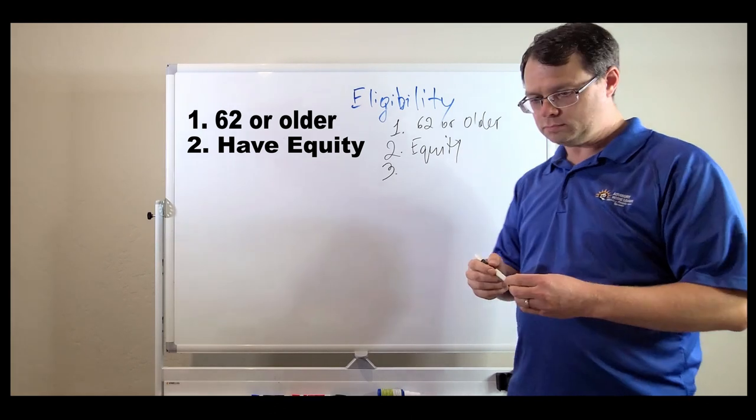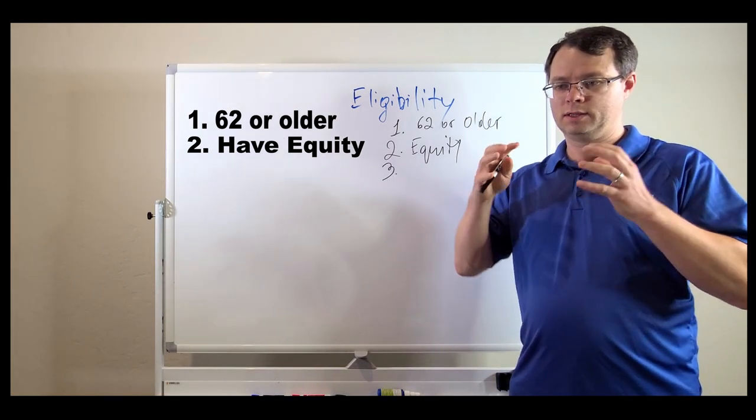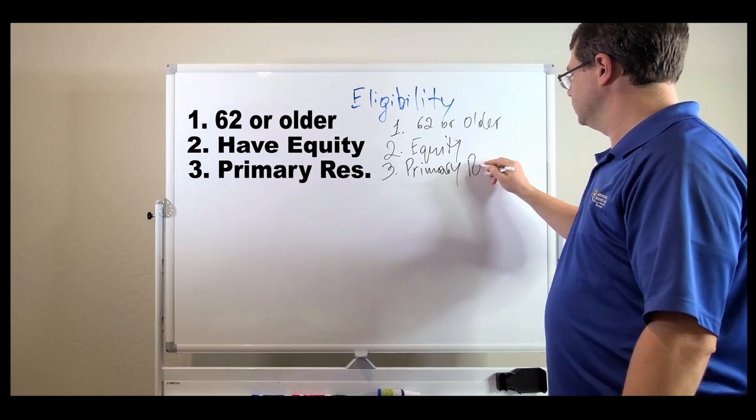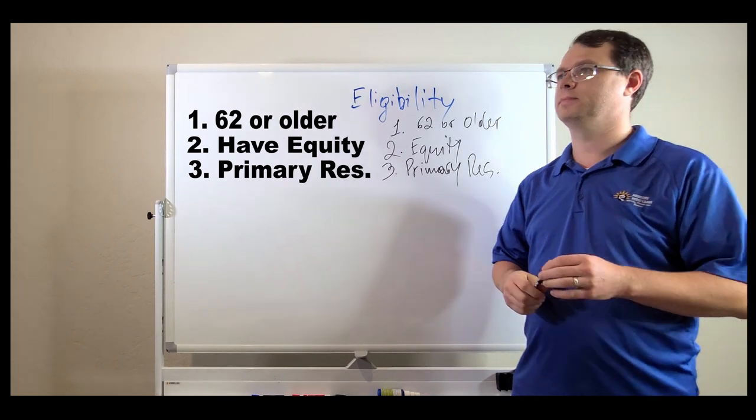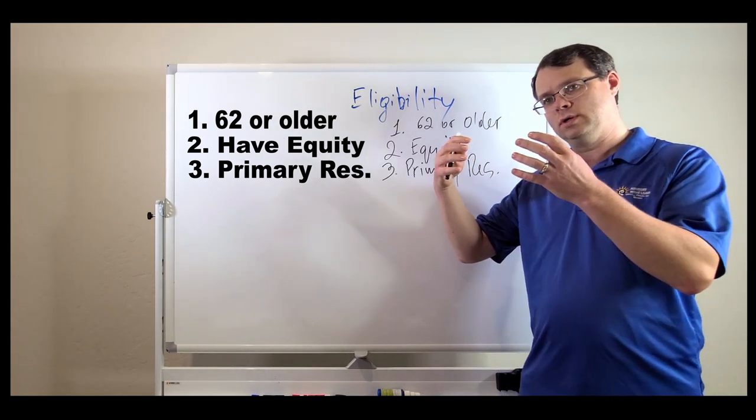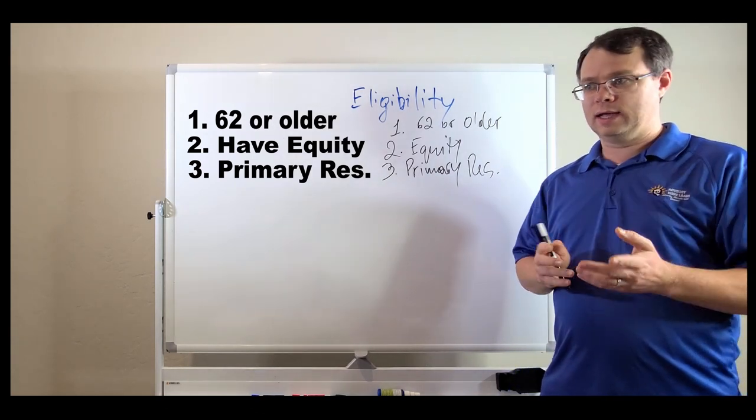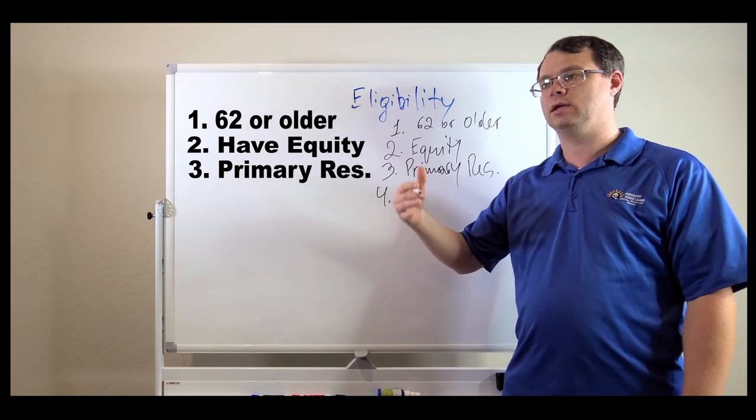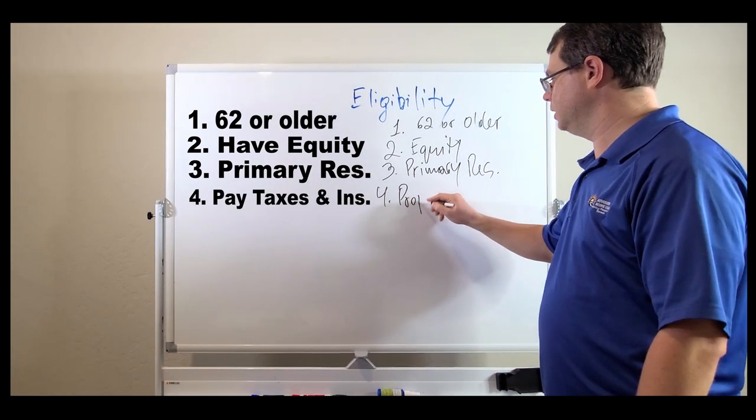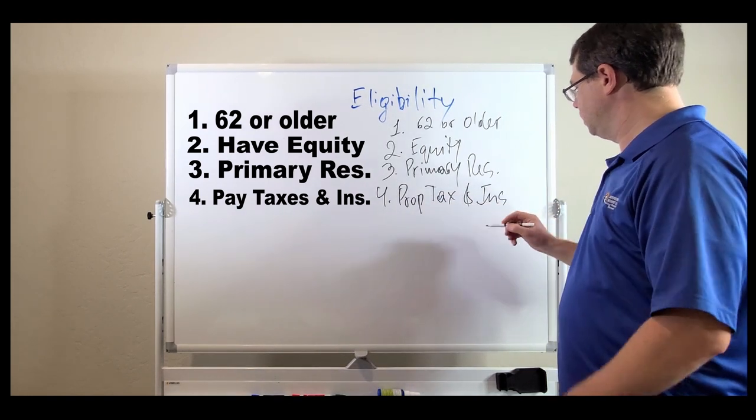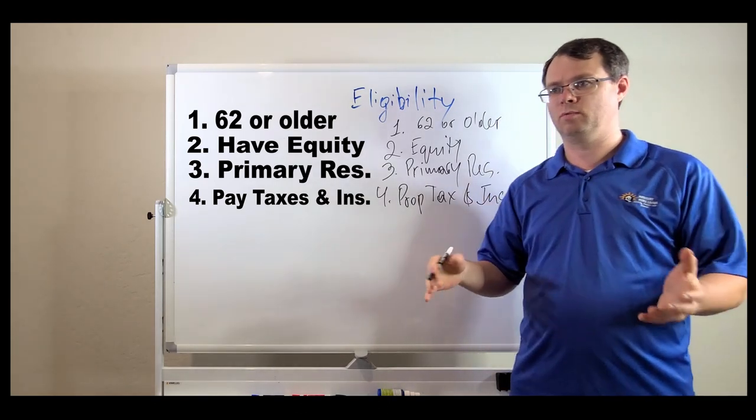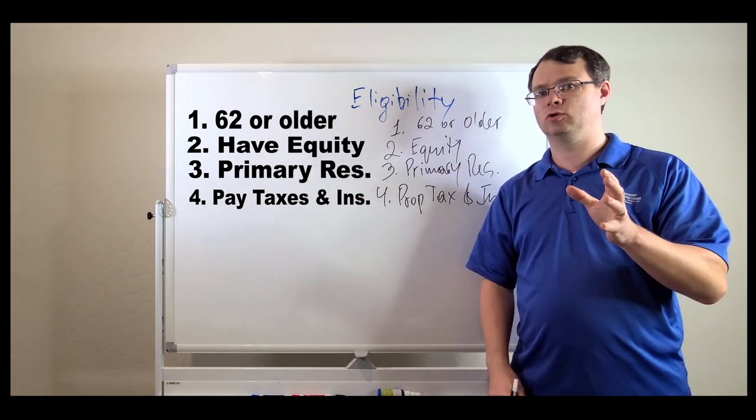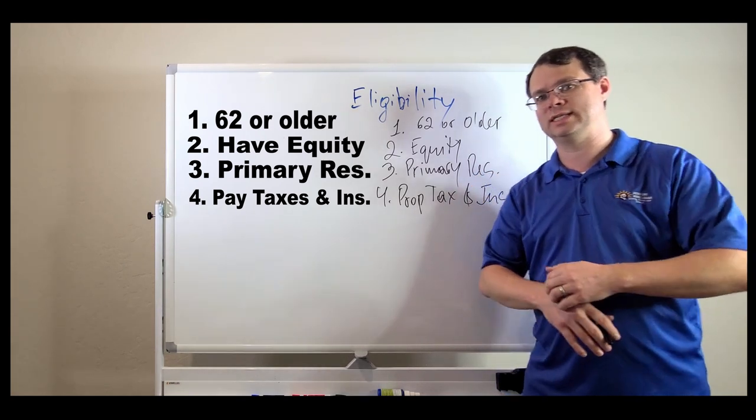Now, the third requirement is on the residence. The house has to be your primary residence. It cannot be a second home. The house cannot be an investment property. You have to physically live in this house. And one of the final requirements is you have to maintain property taxes and insurance. You have to pay for property taxes and insurance. Now, this is a requirement for any loan. Whether you have a regular loan, you still have to pay property taxes and insurance. And if you are in the HOA community, you have to maintain those payments as well.